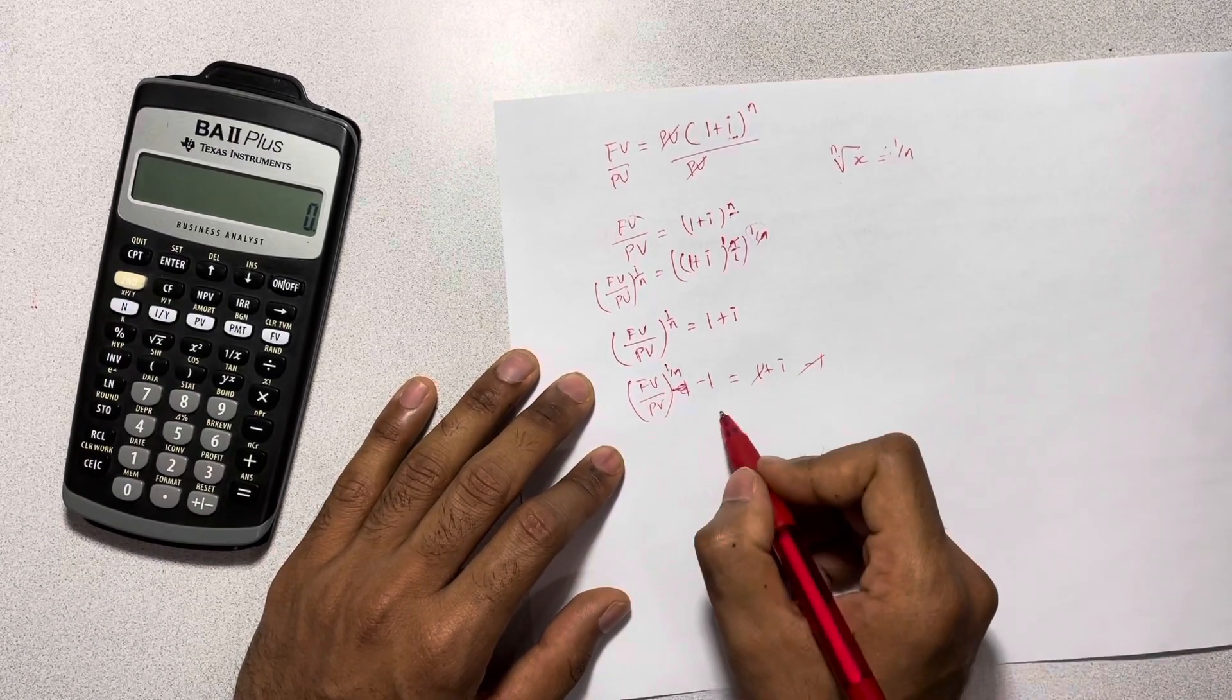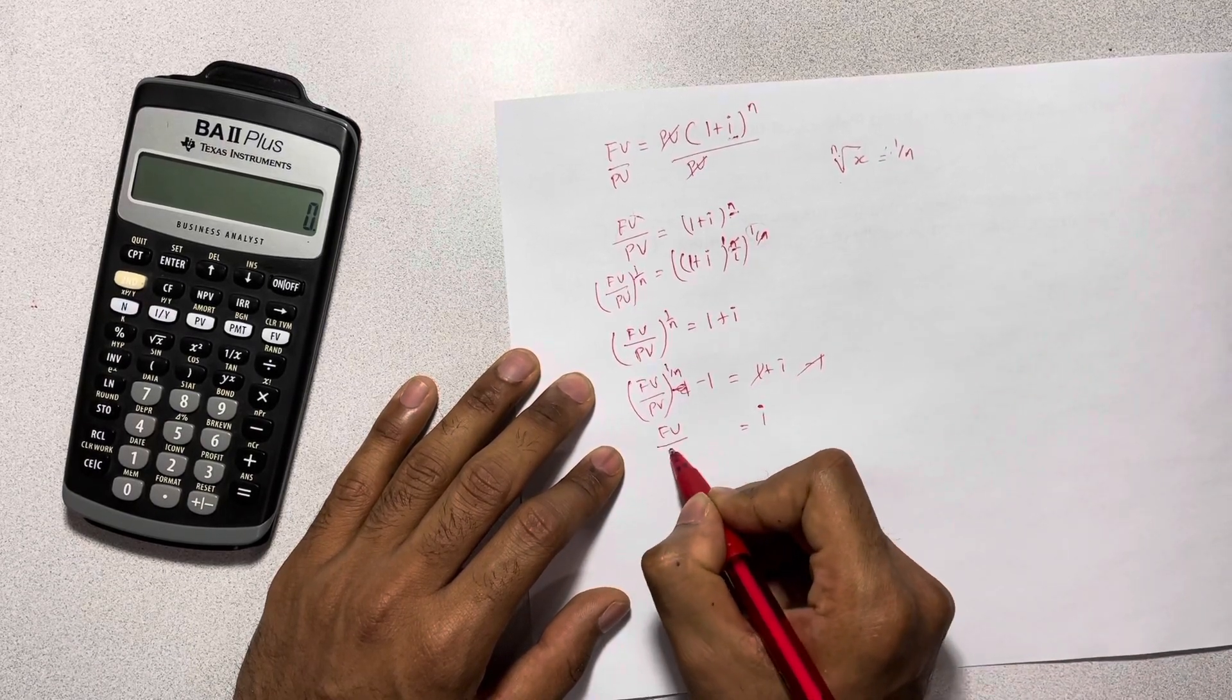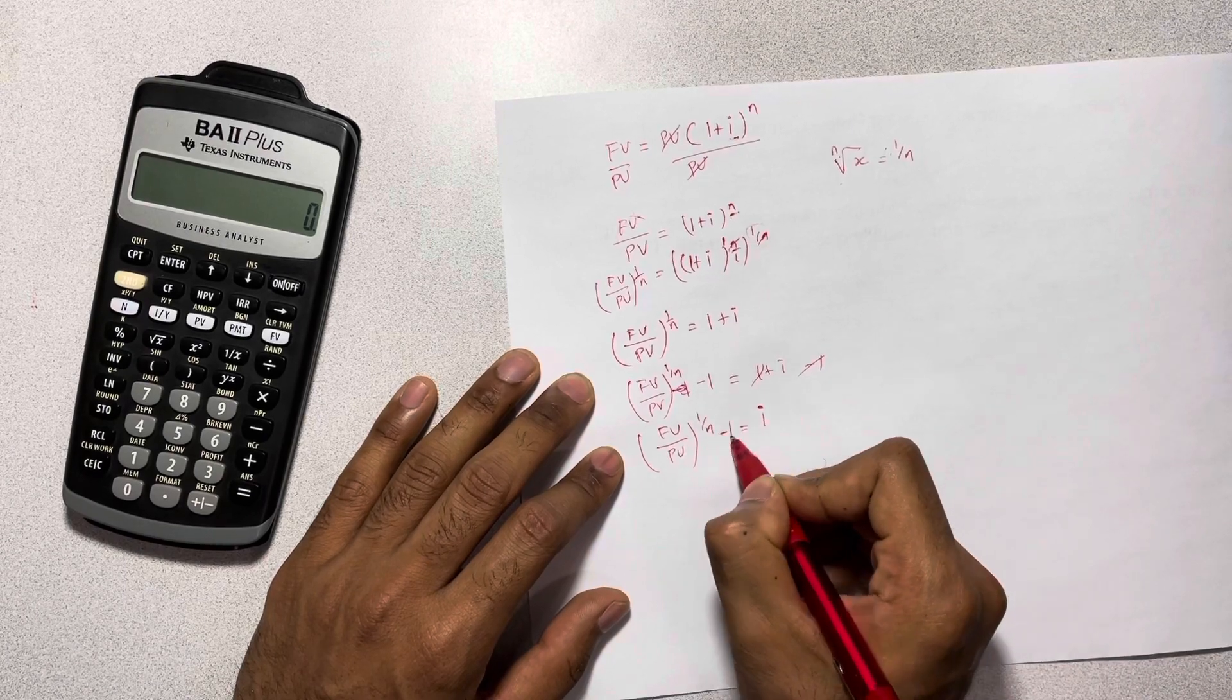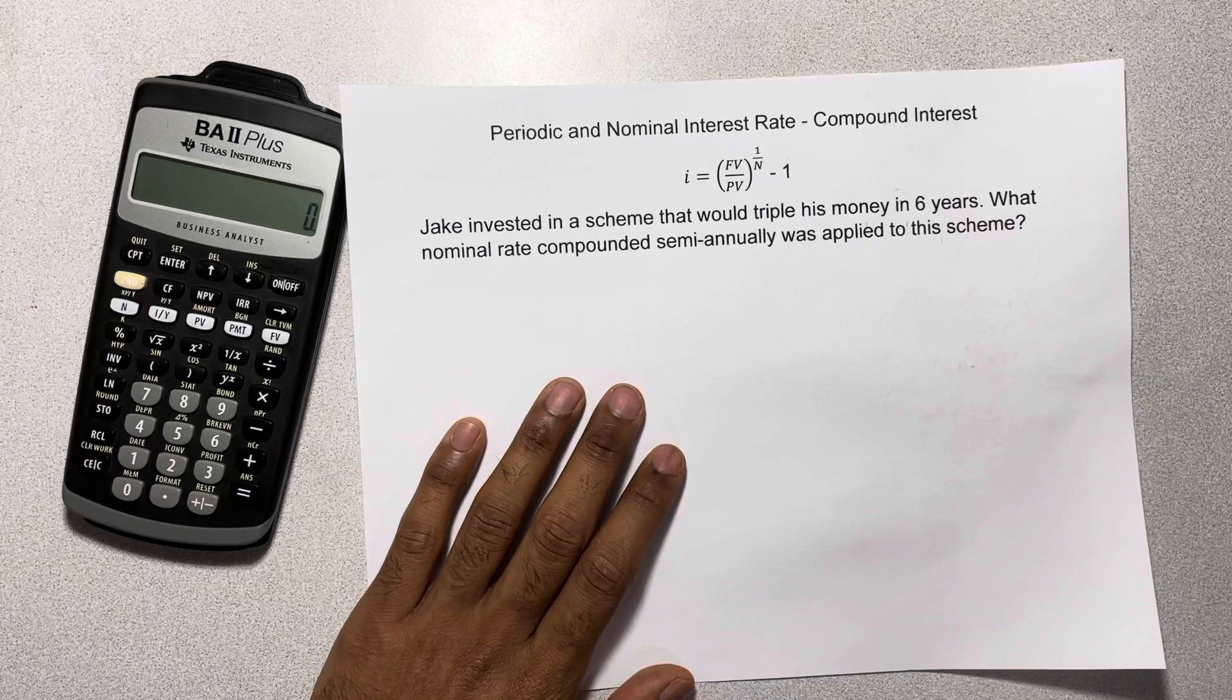So 1 and 1 is gone. You're left with i is equal to future value over present value to the power of 1 over n minus 1. That equation is exactly the same as this equation. So that's how we get here.